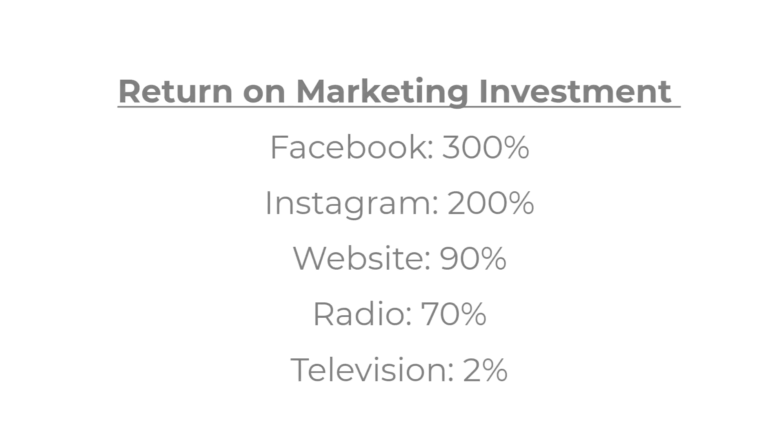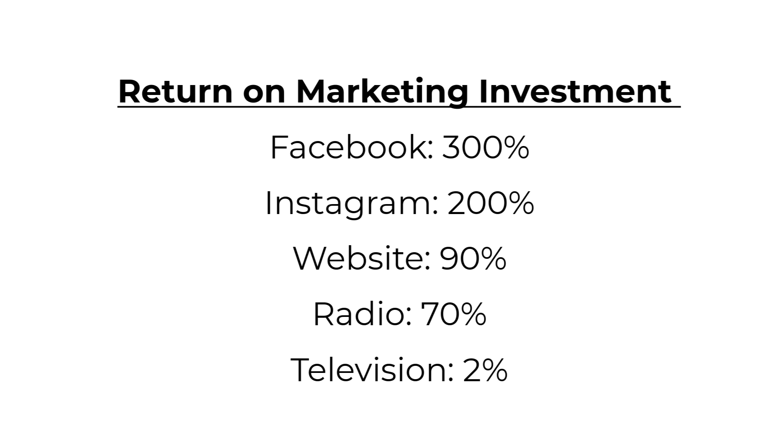Beyond just giving you an idea of whether you have a good or bad marketing investment, calculating your ROMI will also allow you to rank your marketing initiatives so that you can decide if you want to continue them or if you want to readjust or reallocate your marketing dollars. For example, if you find that your ROMI is as follows: Facebook 300%, Instagram 200%, website 90%, radio 70%, television 2%.